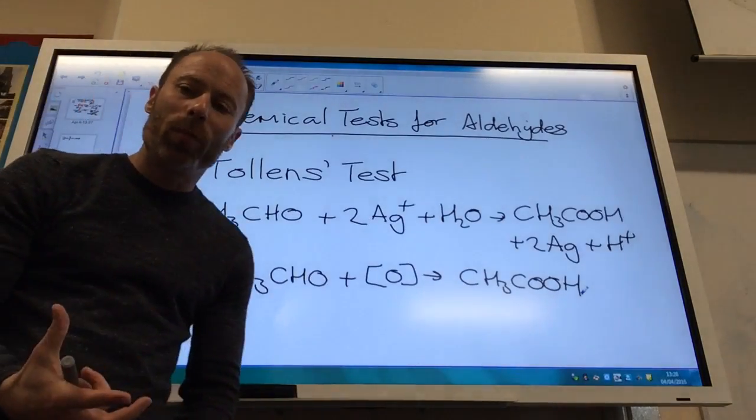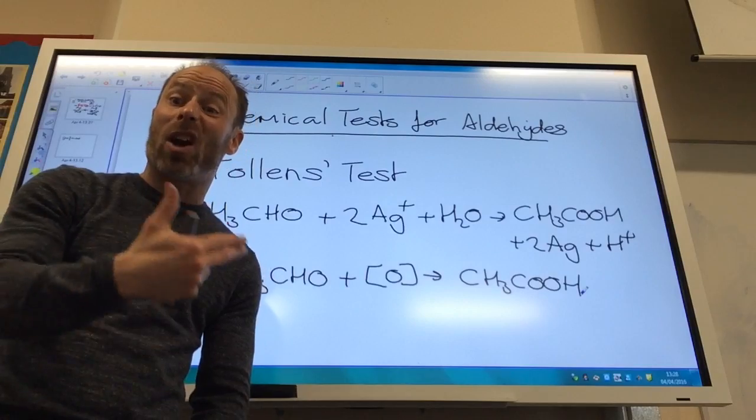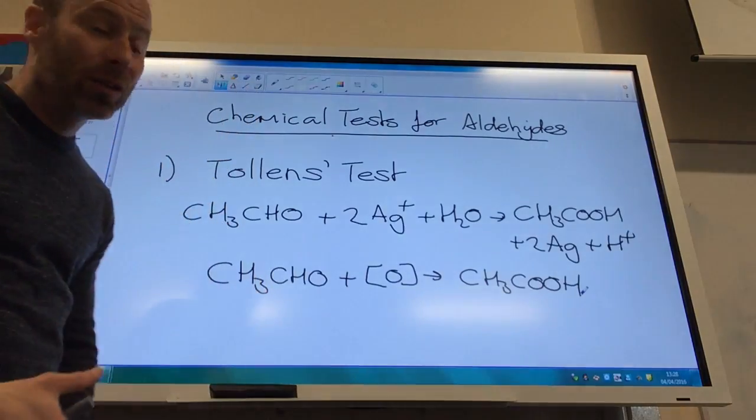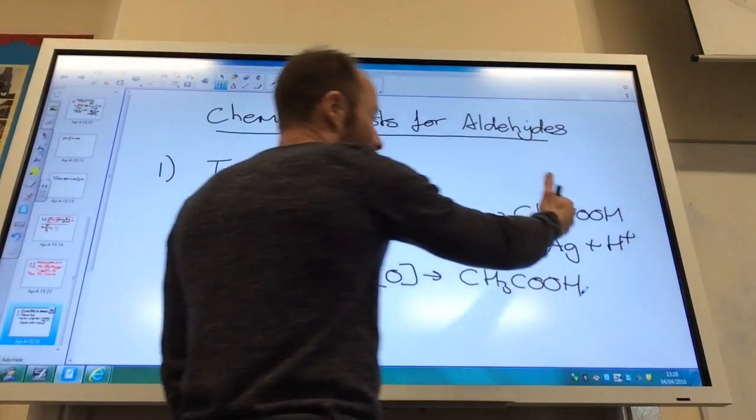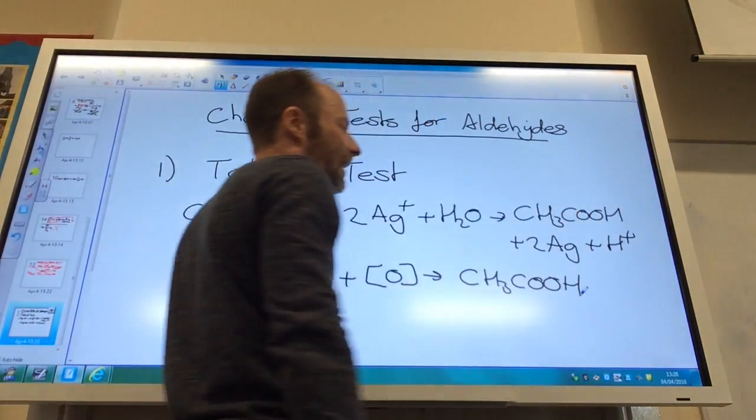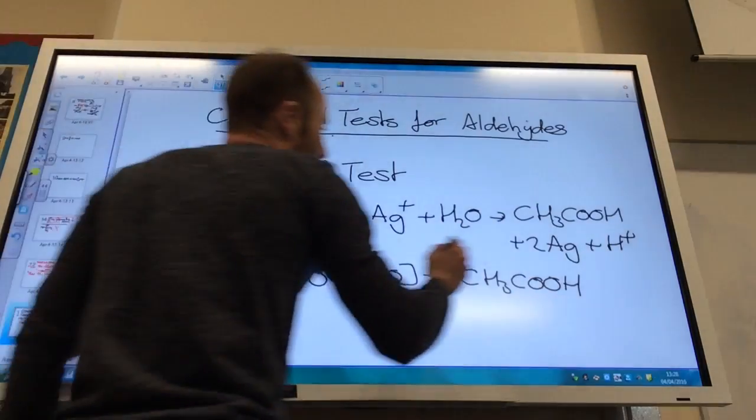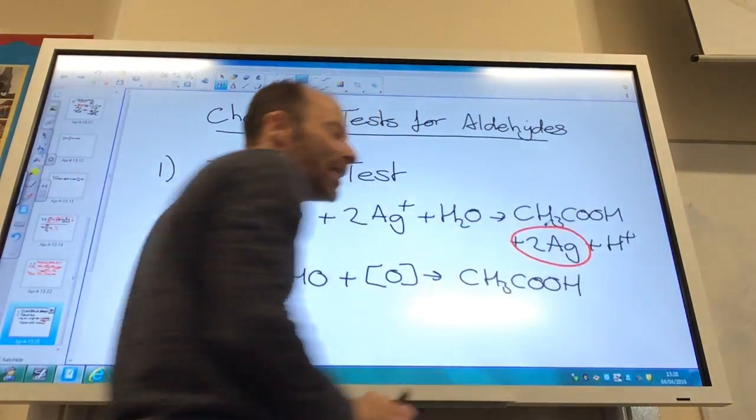If you warm it up and you've got an aldehyde, because aldehydes can be oxidized, the aldehyde will be oxidized to the carboxylic acid. So here my ethanol is being oxidized to ethanoic acid, but this is the important one. It forms silver metal.